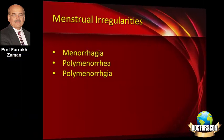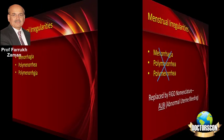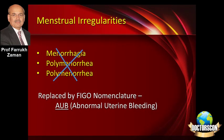Previously we have been using — and still use — the terms menorrhagia, polymenorrhoea, polymenorrhagia, etc. But now these terms have become redundant and have been replaced by the new nomenclature under the heading of abnormal uterine bleeding.